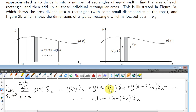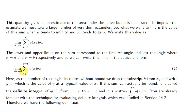If this sum can be found, it is called the definite integral of y of x from x equals a to x equals b, and it is written like this. We replace delta x with dx, and we replace the sigma notation and this limit with the integral sign, which is like an elongated S. Think of S for sum — we're summing these quantities from a to b.